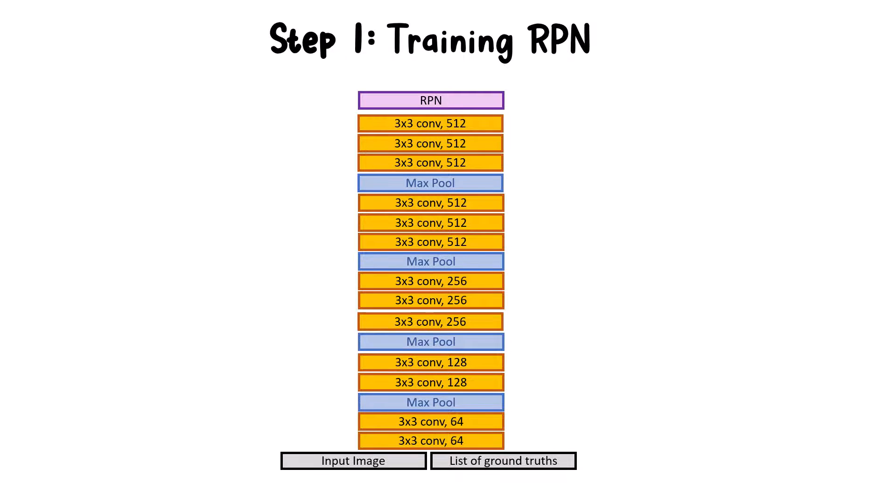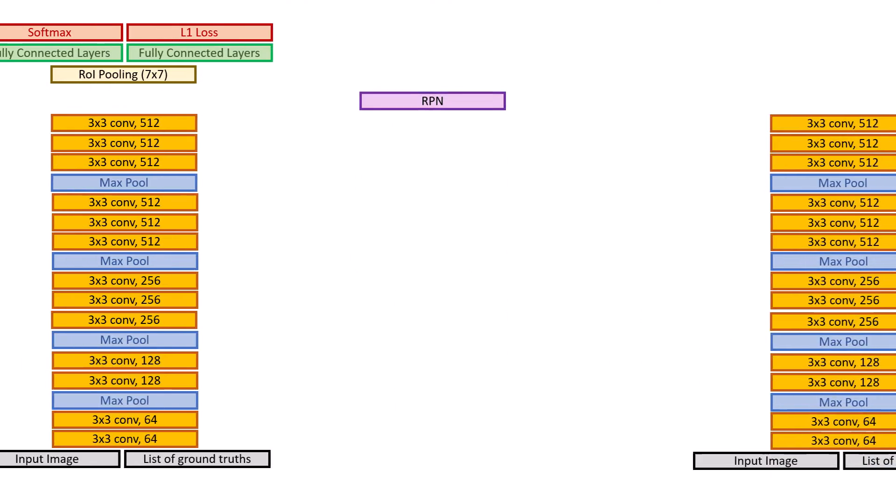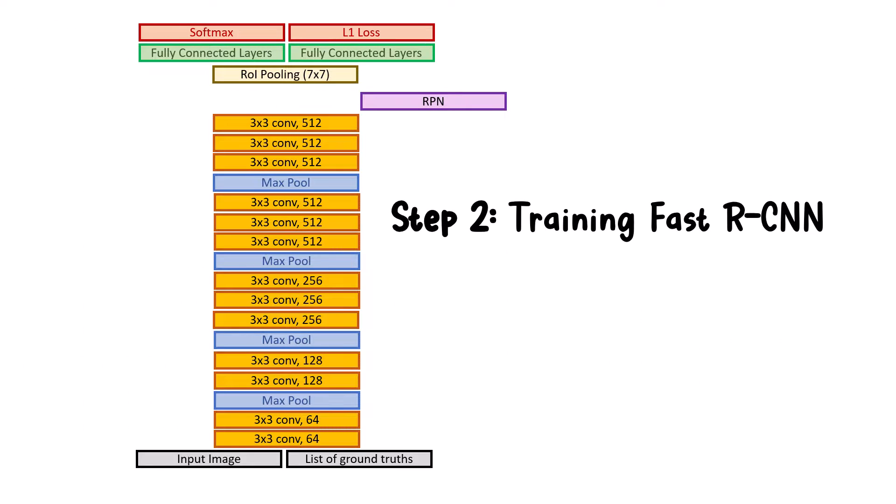But doing this causes the backbone weights to be changed as well, which might not be a good thing, because for detecting whether there is an object or not, the backbone might forget features that are useful for classification. So in the second step, we throw the RPN backbone away and initialize the backbone of Fast R-CNN with ImageNet weights.